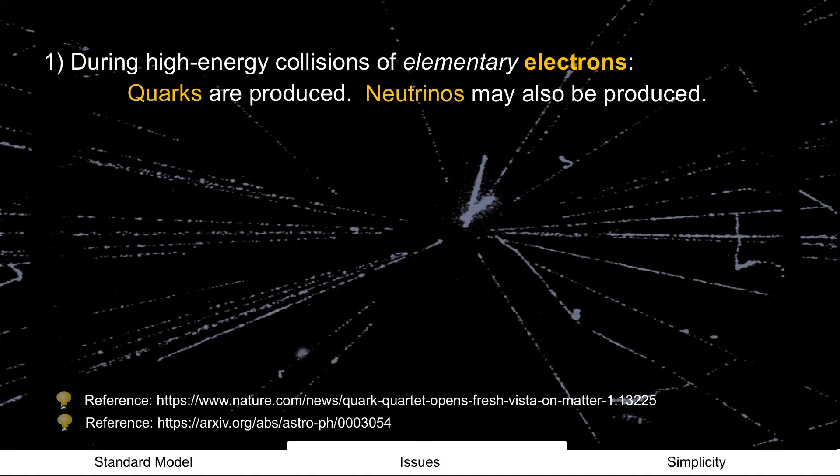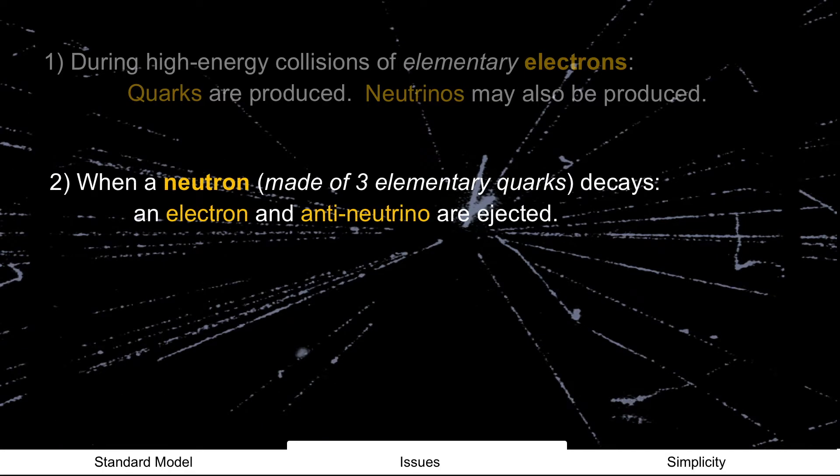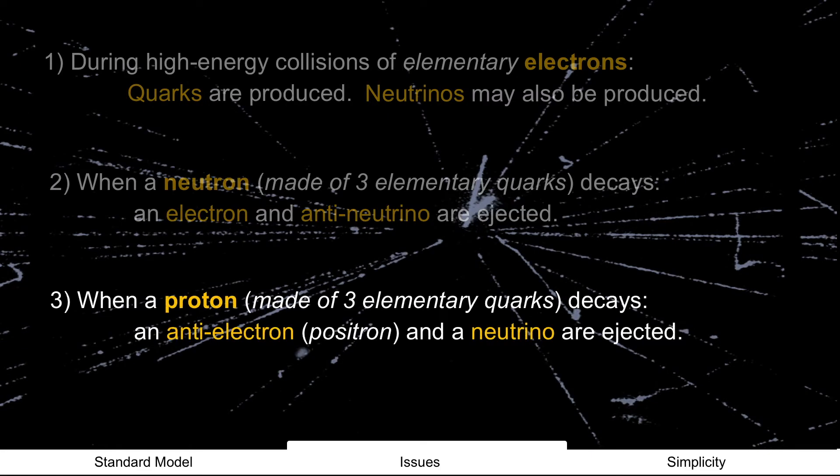And collide electrons and positrons and neutrinos can be produced. That's peculiar because an electron is supposed to be elementary. Alright, a neutron is supposed to be made of three quarks. Again, that's supposed to be elementary, but it decays to an electron and an anti-neutrino. Or a proton, also made of three quarks, decays to an anti-electron called a positron and a neutrino. Really, it doesn't take a rocket scientist to figure out that a quark is probably not an elementary particle and strangely, an electron might not be either.